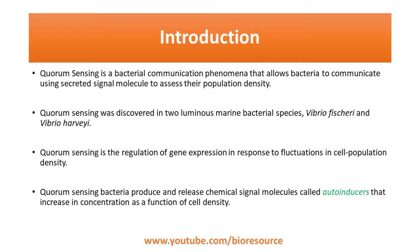In quorum sensing, the bacteria produce certain signaling molecules that help regulate gene expression and regulate the behavior of the population. The bacteria assess their population density by detecting the concentration of a particular signal molecule called the autoinducer, which is correlated with the population density. The rate at which the autoinducer is produced is controlled by the population density.